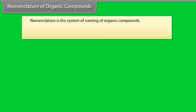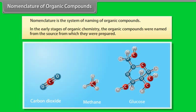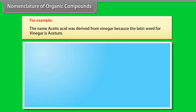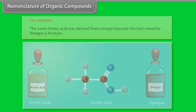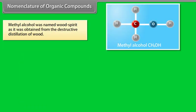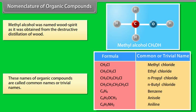Nomenclature is the system of naming organic compounds. In the early stages of organic chemistry, organic compounds were named from the source from which they were prepared. For example, the name acetic acid was derived from vinegar because the Latin word for vinegar is acetum. Methyl alcohol was named wood spirit as it was obtained from the destructive distillation of wood. These names are called common names or trivial names.